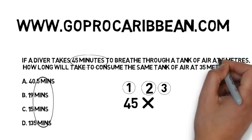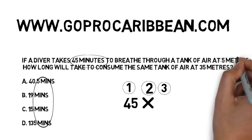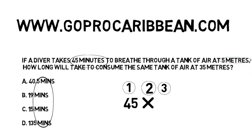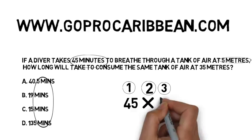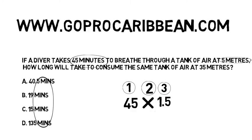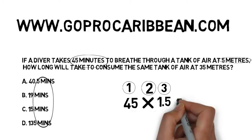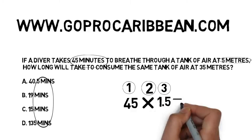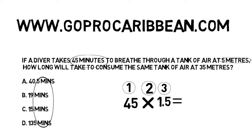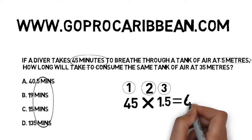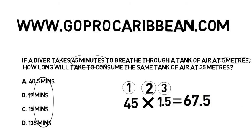Step three: look at the starting depth. It's five meters. What's the pressure at five meters? It's 1.5 atmospheres. We now have our initial calculation giving us 67.5 minutes surface air consumption rate.